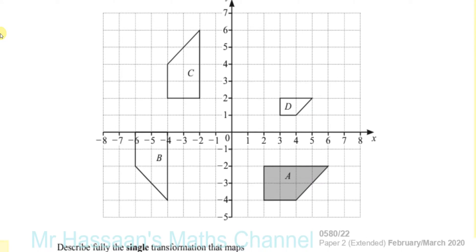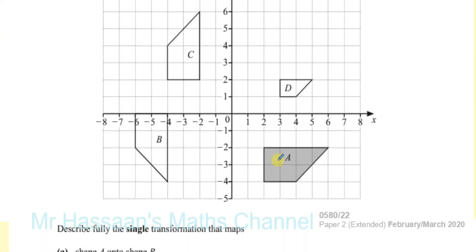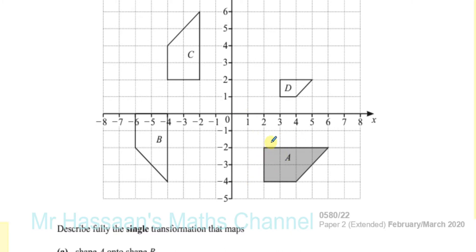Shape A onto shape B — this is not a translation, as it hasn't just been picked up and moved around in the same orientation. And neither is it a reflection. It's also not an enlargement because they look exactly the same size. But it looks like it's a rotation.